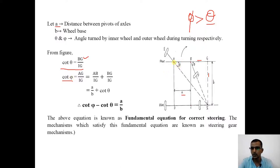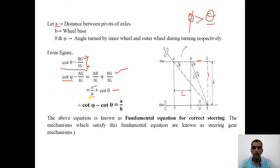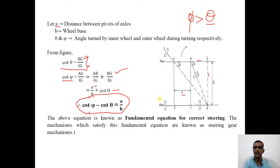Rearranging the expression, cot phi − cot theta = a/b. This is the fundamental equation for correct steering. Any steering gear mechanism that satisfies this equation results in less wear and tear of the tires. Here, phi and theta are the dynamic angles through which the wheels turn when taking a left or right turn. For a particular instant, cot phi − cot theta should equal the ratio of the distance between pivot axles (a) to the wheel base (b). The right-hand side is always constant while the left-hand side keeps changing.